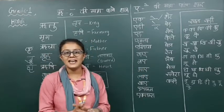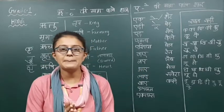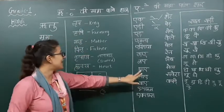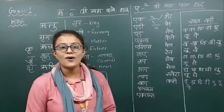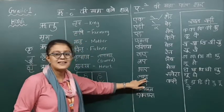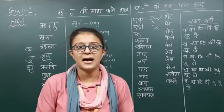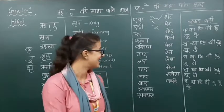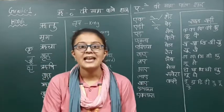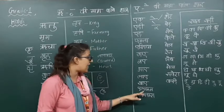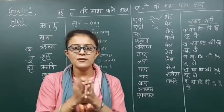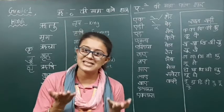Now let's read the shabd: ek — yaani ki one number. Next is naye — Papa mere liye naye joote laaye hai. Next is aaye — Papa office se aaye. Next is laaye — laaye yaani ki kuch laaye, Papa mere liye kuch laaye hai. Next is khaye — Papa khana khaye. Next is album — album kya hota hai? Photo album, right? You all are having your photos in one album — that is known as album.